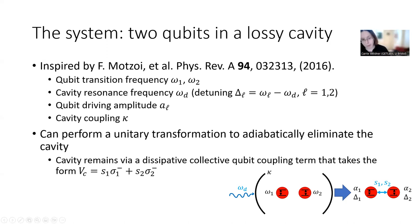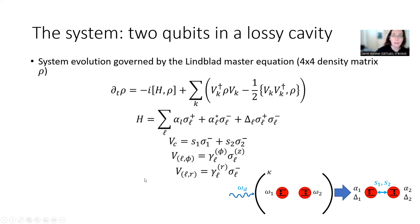But the cavity can be somewhat annoying. So we perform instead a unitary transformation that adiabatically eliminates the cavity. And so that really gets rid of this kappa term and whatnot. And the cavity really remains in the system via this collective qubit coupling term that takes the form of a dissipative coupling. And it's this S1 sigma 1 minus plus S2 sigma 2 plus, which you can see illustrated down here. And this is collective. I want to emphasize this. This is not the same as just having two isolated qubits. And it's because you have to treat this term collectively.